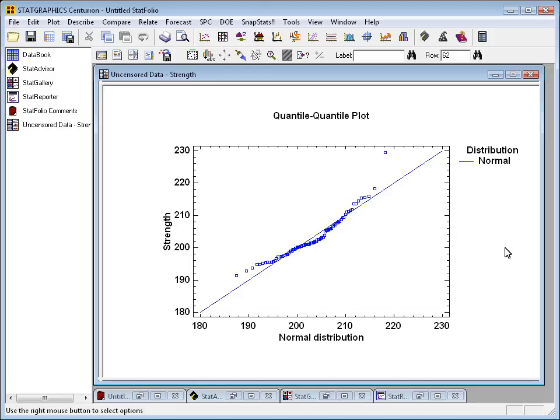What this plot does is it begins by taking the 100 observations in the data set. Along the y-axis, you'll see the actual measured strength of my widgets. What it's done is it's actually sorted the data from smallest to largest. So this point down in the bottom, which is at about 191 pounds per square inch, is the smallest observation in the data.